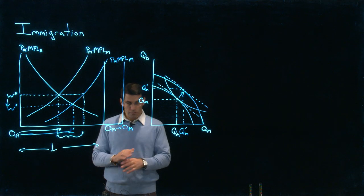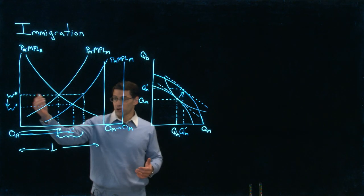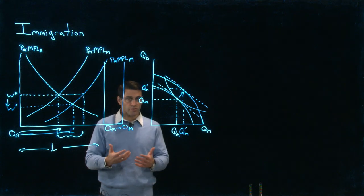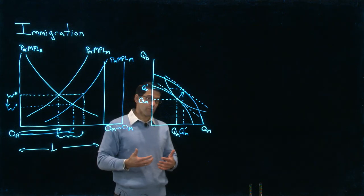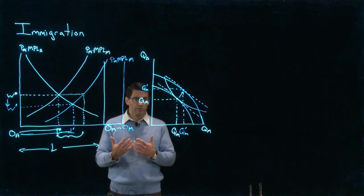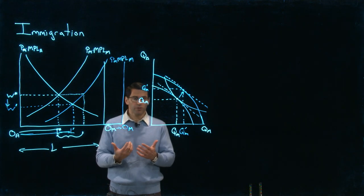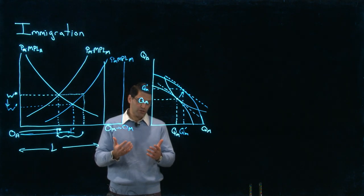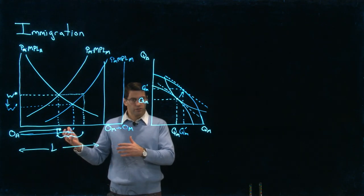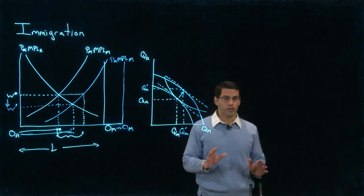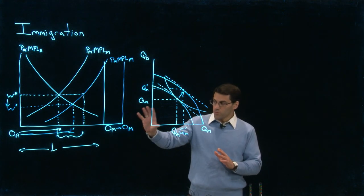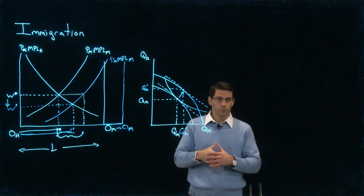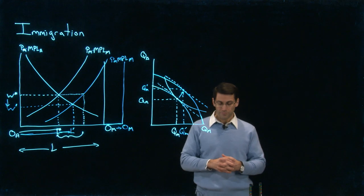Another important thing to note: in this model there's no unemployment. The wage adjusts so that everybody remains fully employed. In reality, if there are wage rigidities — if wages aren't freely flexible — or if we introduce sector-specific human capital or barriers to entering other occupations, we might see some unemployment arise. We've abstracted away from all of that. So in reality, not all of the impact on native workers will necessarily be along the lines of wages; it could also manifest as lower rates of employment.